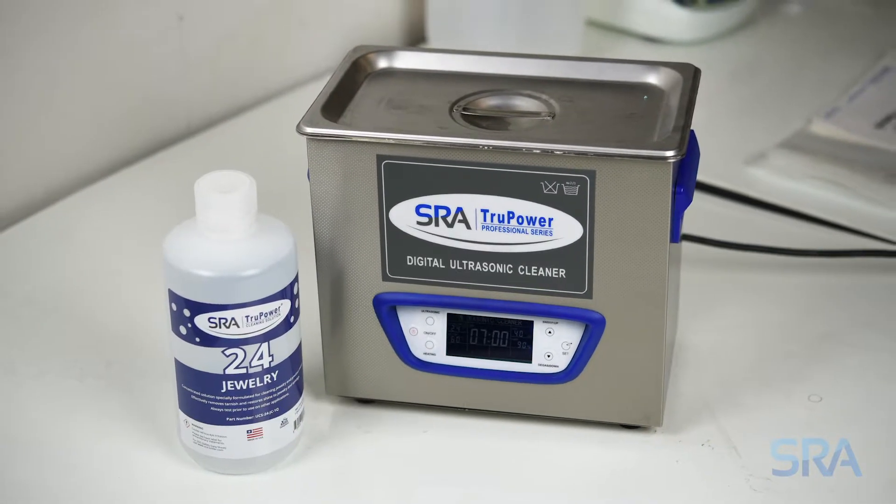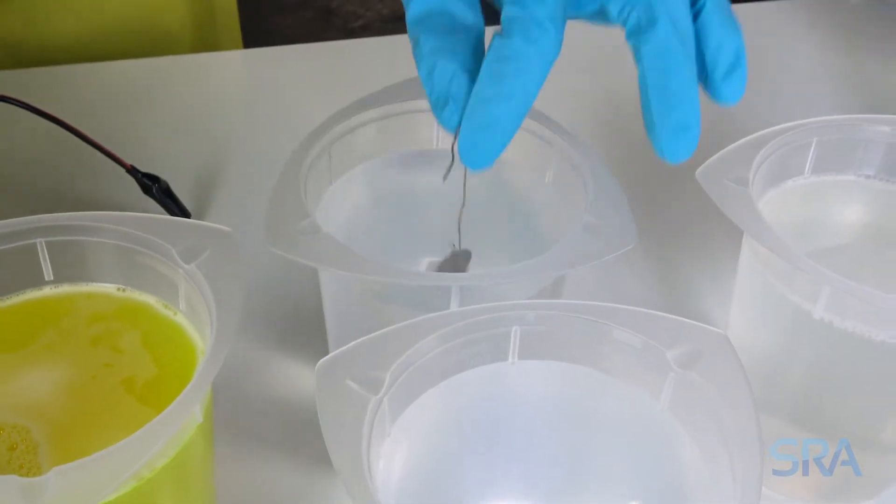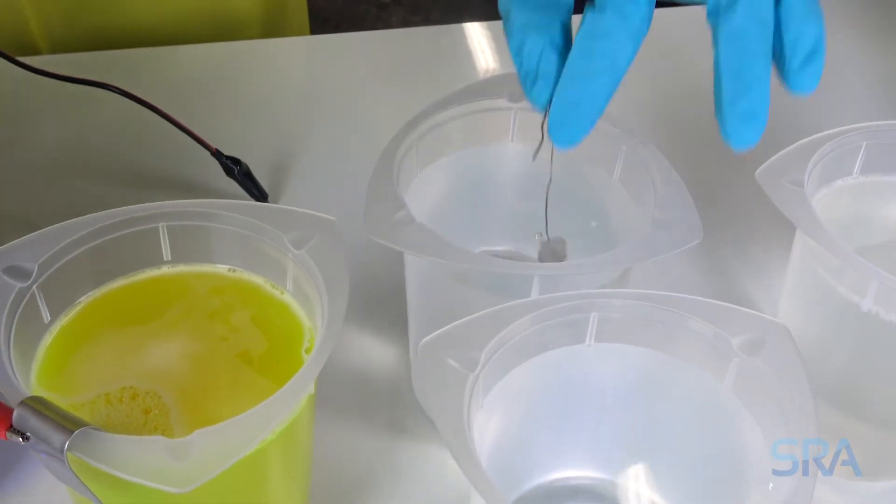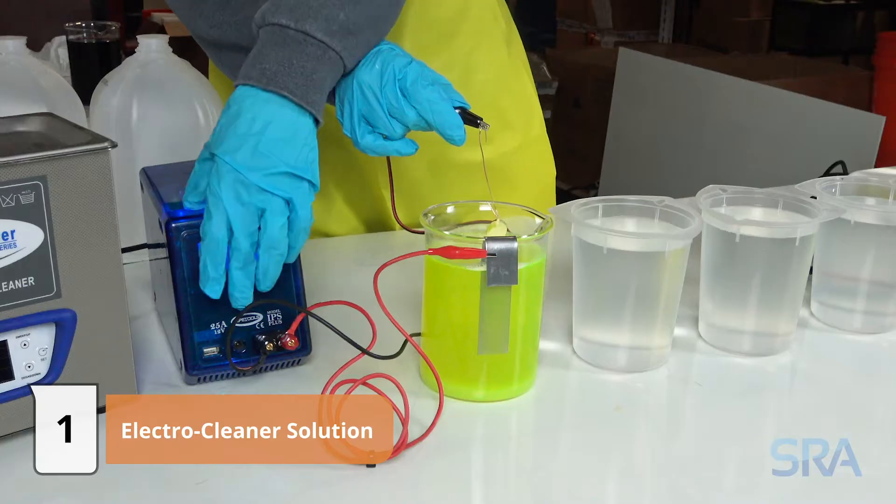start with polishing and then cleaning in an ultrasonic cleaner. Once clean, rinse in distilled water. For new items you can usually go straight to the electro cleaner. Use a piece of copper wire to hold your item and connect